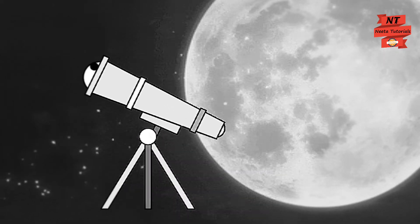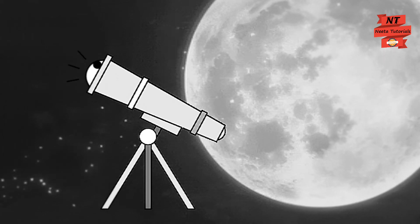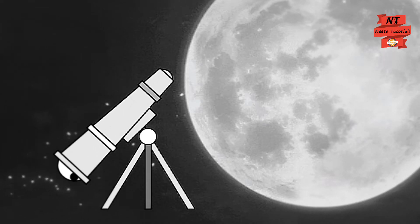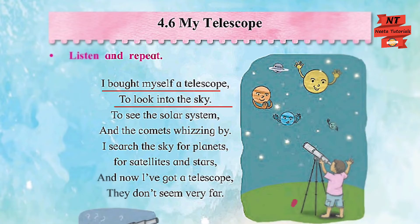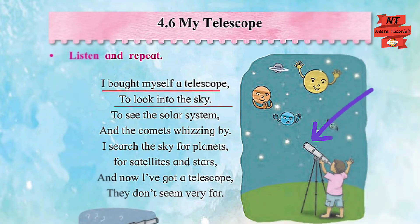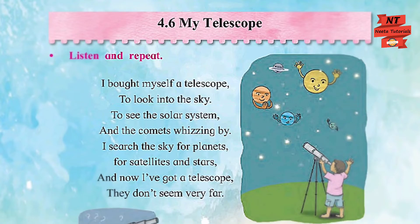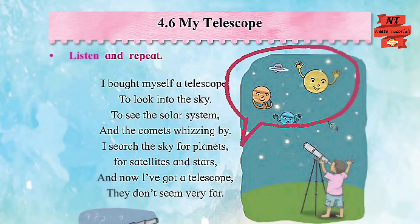'It's brought them very close to me, it's made the stars my friends, except of course when I make a mistake and look through the wrong end.' Now let's understand the poem. The little boy, as you can see in the picture, bought a new telescope because he was very curious to know about the shining bodies seen in the sky.